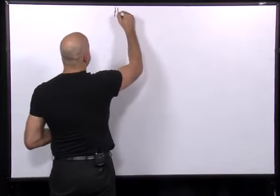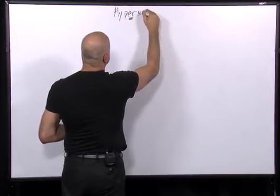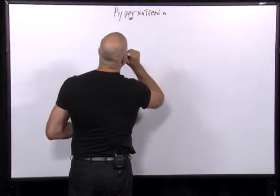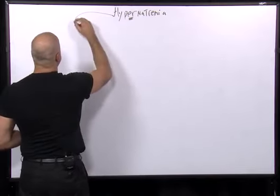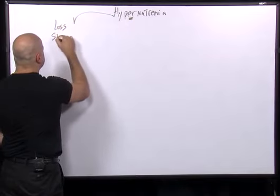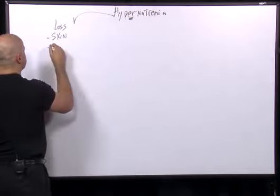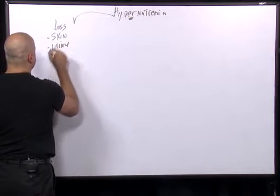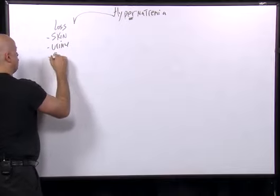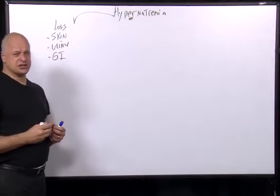Now, hypernatremia — with a high sodium — we want to ask: is this simply a person who has had chronic loss of fluids from the skin through sweating, or from the urine through diuretics or polyuria, or from the GI tract through vomiting, diarrhea, or nasogastric suction?